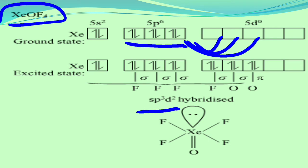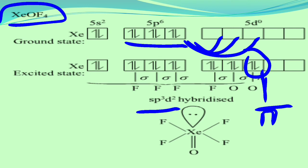One remaining electron is used for the formation of a pi bond with oxygen, because oxygen always forms a double bond with the central atom. In that double bond, one bond is a sigma bond and another is a pi bond. For hybridization, we consider only the sigma electrons. We combine 1s orbital, 3p orbitals, and 2d orbitals to form the sp3d2 hybridized state, and the remaining electron in the d orbital is used for the pi bond with oxygen.